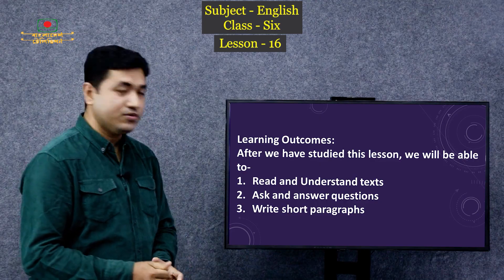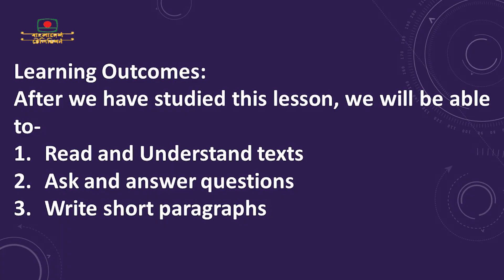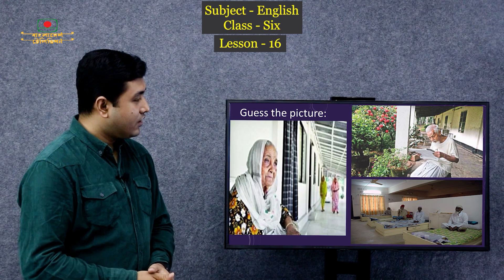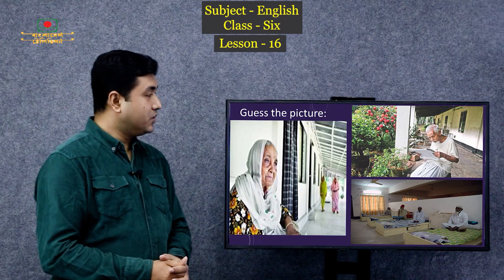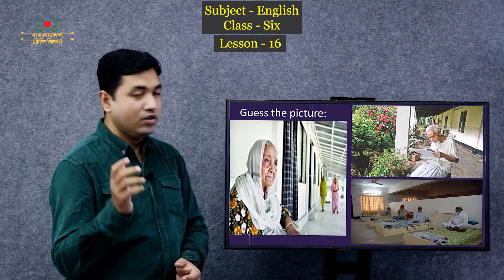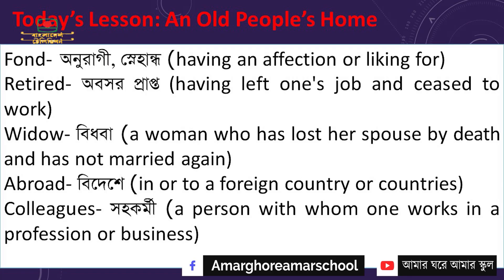Let's see the learning outcomes of today's lesson. After we have studied this lesson, we will be able to read and understand texts, ask and answer questions, and write short paragraphs. Here you can see some pictures. Can you guess the location? Where are the people living? It may look like they are living at a home, but it is not their original home — it is an Old People's Rehabilitation Center. So our today's lesson is An Old People's Home.